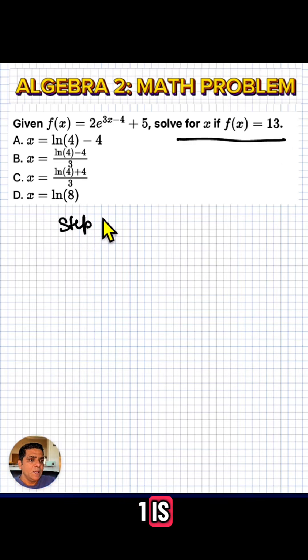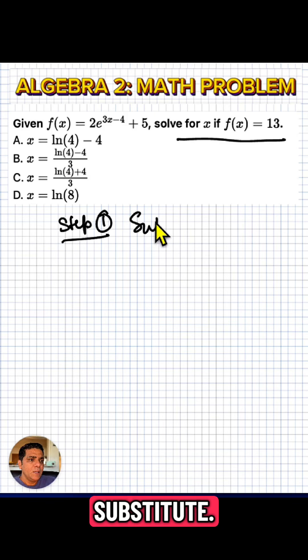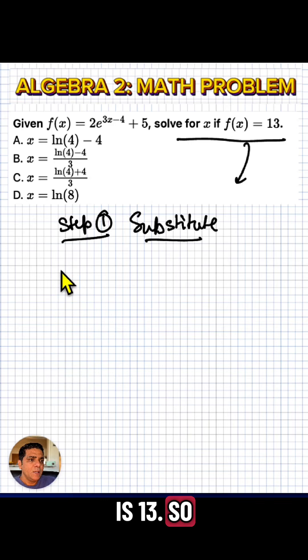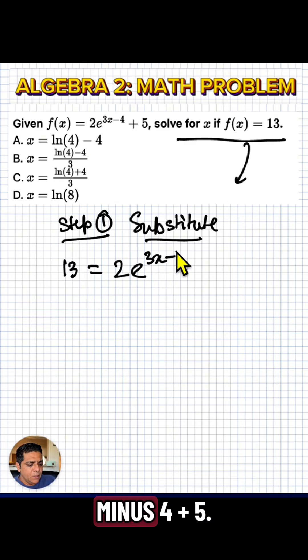Step one is I'm going to substitute. All right, since f(x) is 13, we're going to write 13 instead of f(x). So we have 13 equals 2e to the power of 3x minus 4 plus 5.